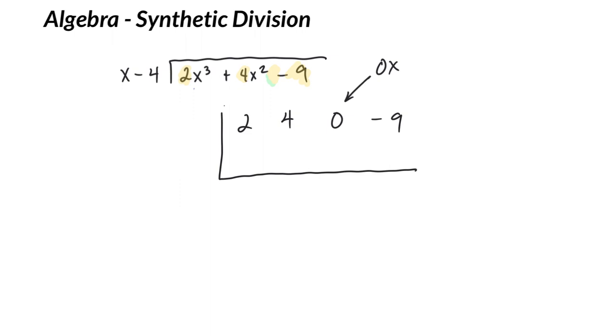Up here, x minus 4 is the factor, so the zero is x equals 4. So that's what I'm going to put here. Just again, make a note. We're going to be adding.